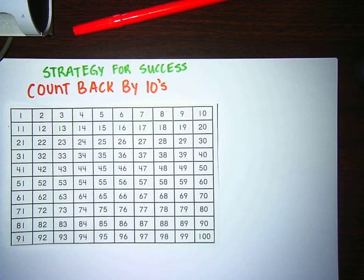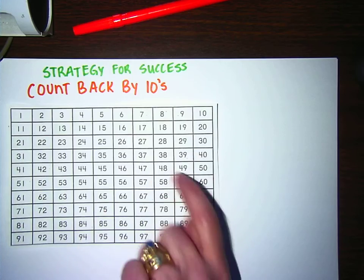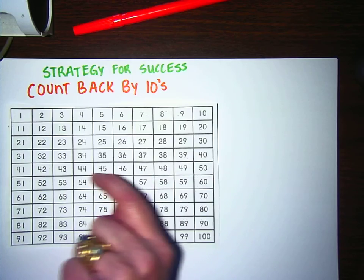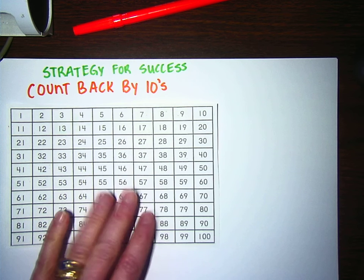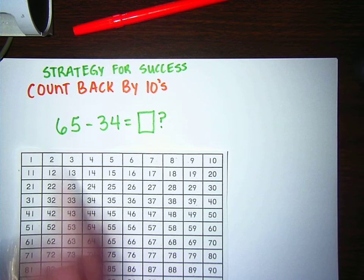If I want to count back by ones, instead of going up, I simply go to the left and I count backwards the amount of spaces for the ones. So how is that going to help me solve a problem like this? Well, if we look, this is 65 minus 34.